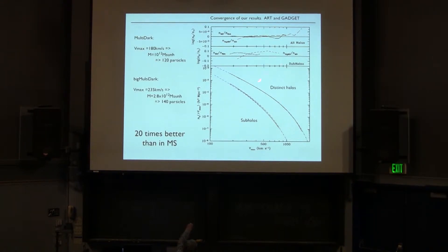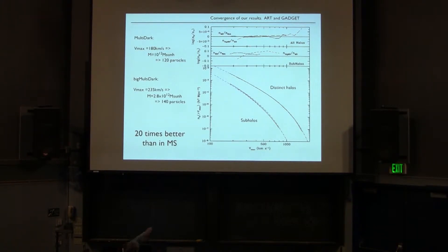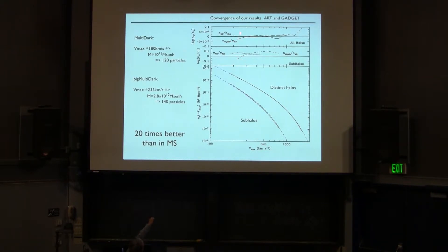We have distinct halos and sub-halos: abundance here, ratios here. We have simulations called MultiDark, BigMultiDark, and Bolshoi. Bolshoi has high resolution. BigMultiDark has a 2.5 gigaparsec box — 10 times bigger — with lower resolution. We do the same ratio. Those curves are distinct halos in those simulations; you don't see the difference, so you do the ratio. For sub-halos you start to see some difference. The difference is small — it's a function of Vmax.